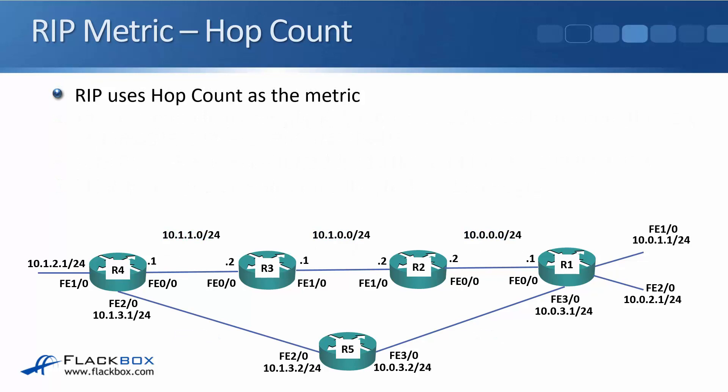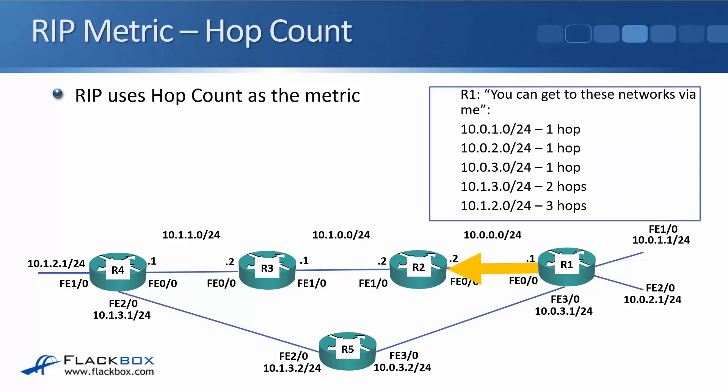Let's walk through an example of how the metric works in RIP. R1 forms an adjacency with R2 and advertises: you can get to 10.0.1.0/24 for one hop, 10.0.2.0/24 and 10.0.3.0/24 also one hop away, 10.1.3.0/24 is two hops, and 10.1.2.0/24 is three hops away. The first three networks are directly connected on R1; 10.1.3 is behind R5, and 10.1.2 is behind R4, so they are one or two additional hops away.